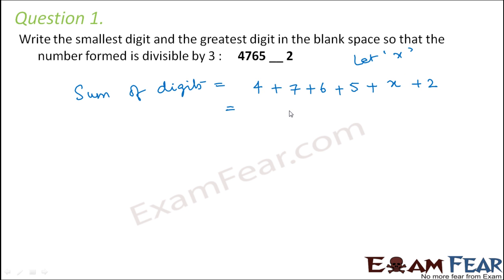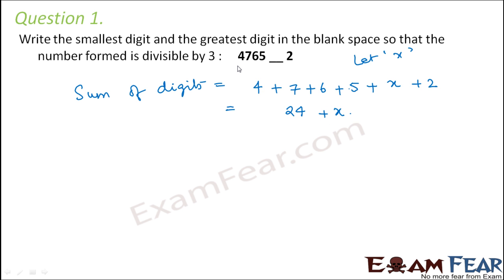So this is equal to 24 — that is 4 plus 7 plus 6 plus 5 plus 2 — that is 24 plus x. So this is the sum of the digits. Now the question is, if this sum of the digits is divisible by 3, only then this number will be divisible by 3.